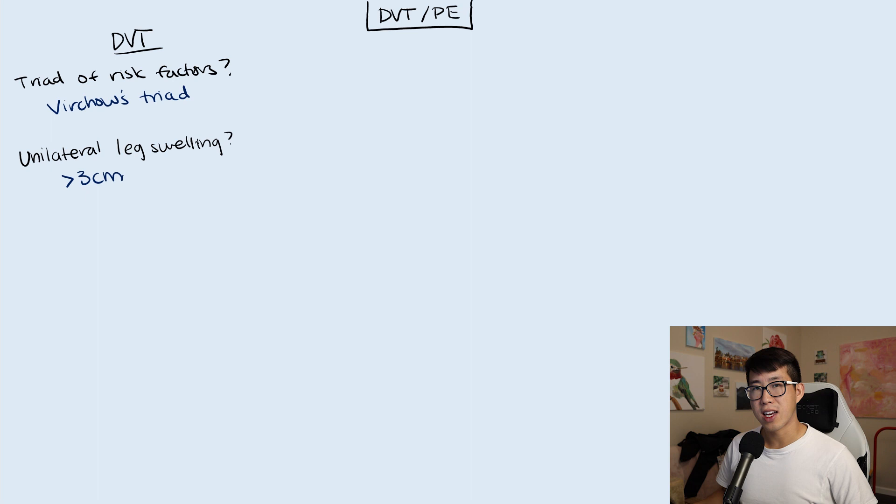Next, what is a physical exam finding that can suggest a DVT? That would be Homan's sign. This is elicited when you dorsiflex the ankle of the patient. If that elicits pain or tenderness at the posterior calf, that would be suggestive of a possible DVT. The sensitivity and specificity is pretty low, but it's very easy to check.